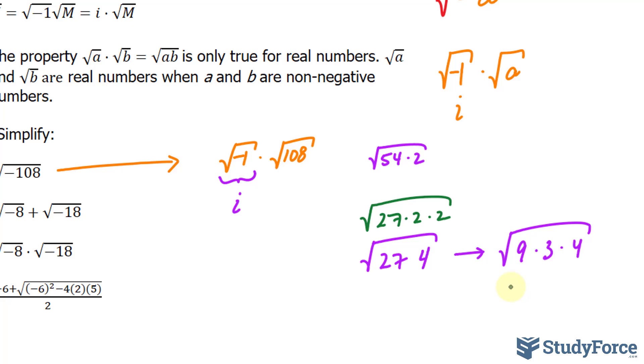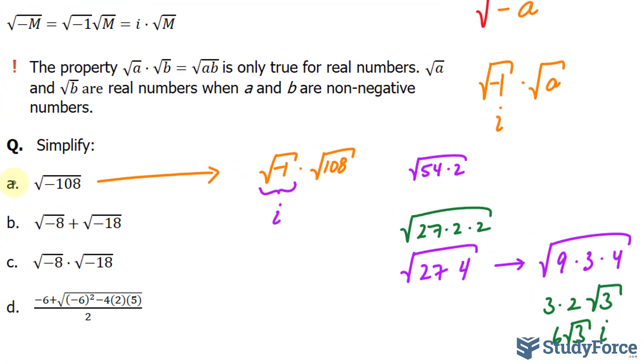9 is a perfect square. It's 3. So is 4. It's 2. 3, on the other hand, is not. So we have 6 times the square root of 3, i. That's the answer to question A.